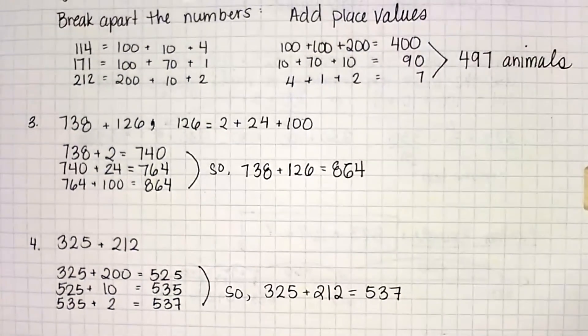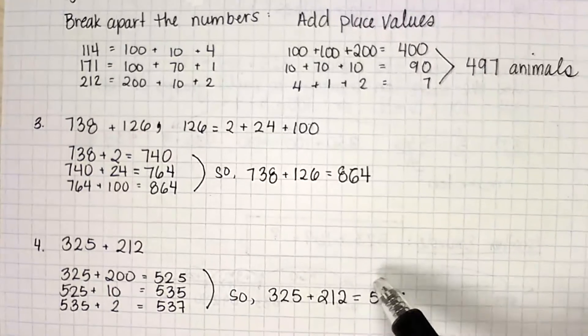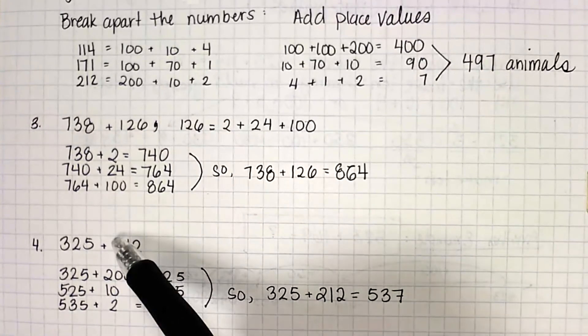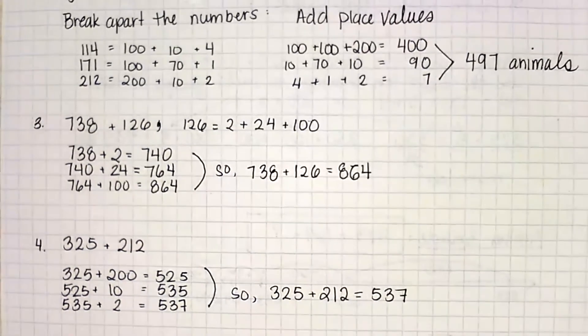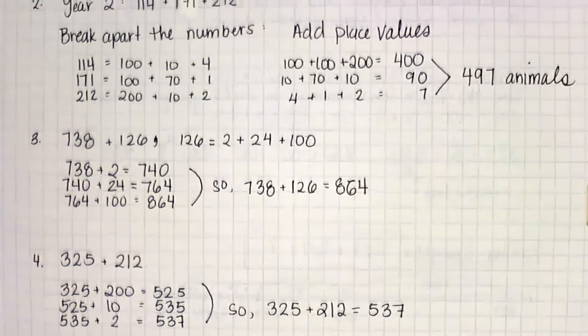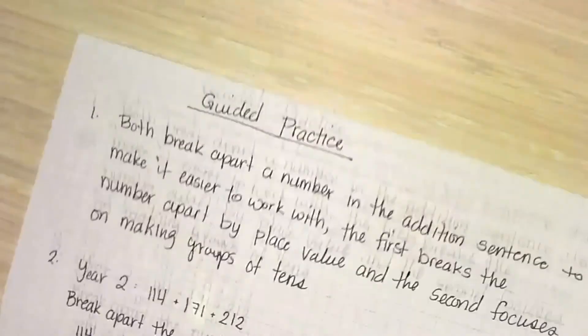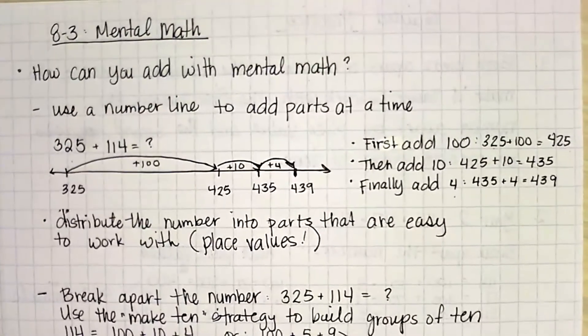So remember, one strategy focuses on making groups of tens or hundreds to make it easy to count up. Another one just focuses on breaking the number into its place value parts and adding each place value part at a time. Whichever strategy you choose to use when it's asking you to use your own is fine. When the questions are asking you to use a specific strategy, you do need to use the strategy that they're asking you about. And that's it for this lesson third grade. If you have any questions, let me know.